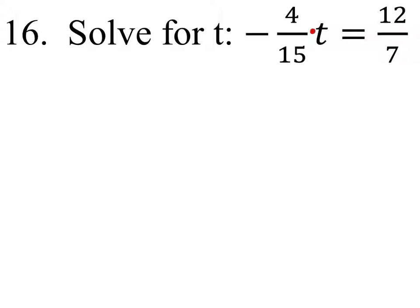Since this is times the t, we need the t to be by itself, or to be 1t. So we use the inverse operation on this one. We're going to divide by negative 4 fifteenths here. That gives us the 1, because they cancel out.